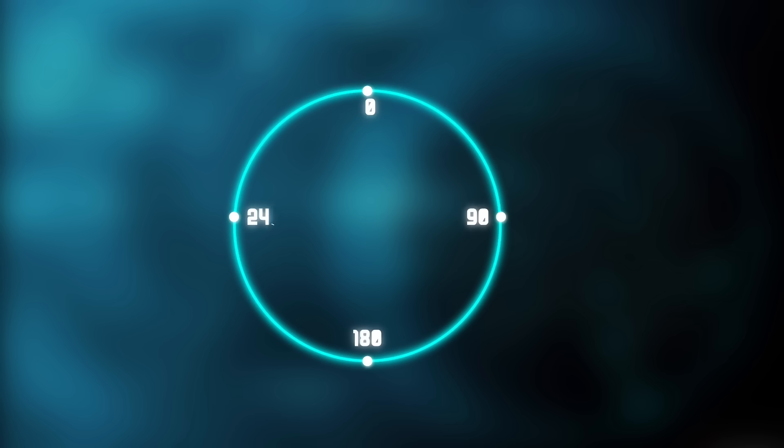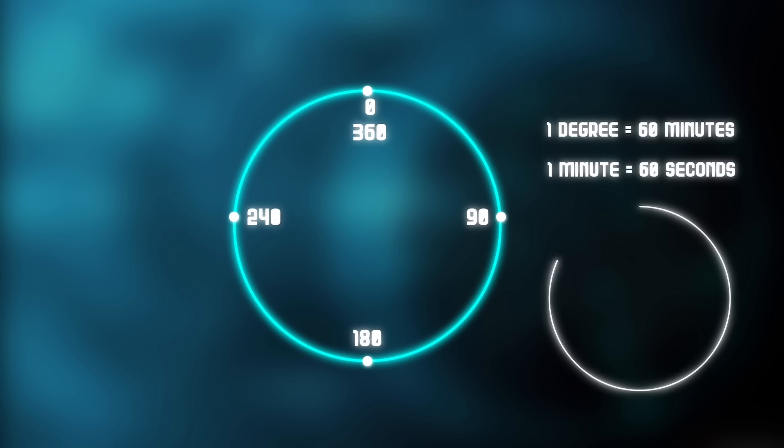An arcsecond is 360 degrees in a circle, and if you take one degree of it, it has 60 minutes within it, and 60 seconds per minute. Of these, 1.75 arcseconds is very small.